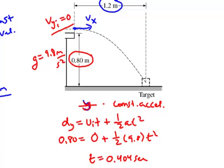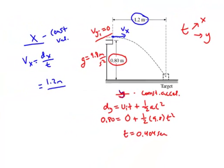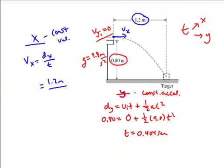Now, the great thing about time is time is always the same in the X and the Y. Time is the great equalizer. So I can take this time, and I can move it over here into my X equation, 0.404 seconds.